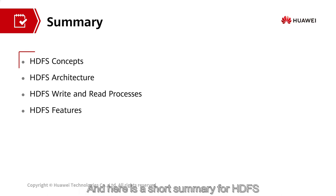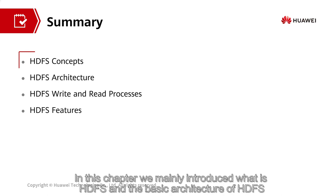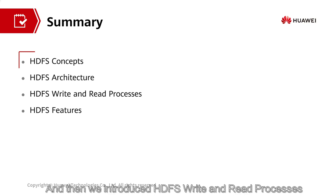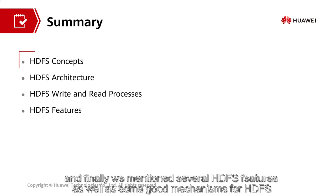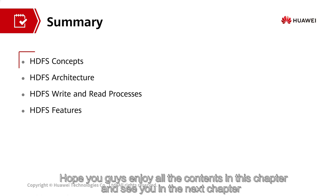That's all we introduced for HDFS. Here is a short summary: in this chapter, we mainly introduced what HDFS is and the basic architecture of HDFS. Then we introduced HDFS write and read processes. Finally, we mentioned several HDFS features as well as some good mechanisms for HDFS, including High Availability and the data replica mechanism. Hope you enjoy all the contents in this chapter, and see you again in the next chapter.